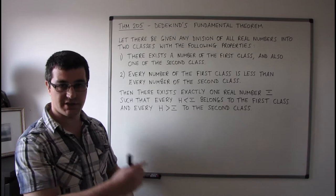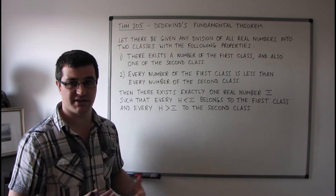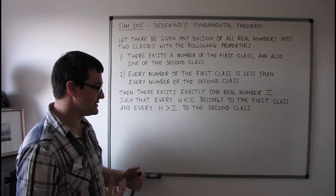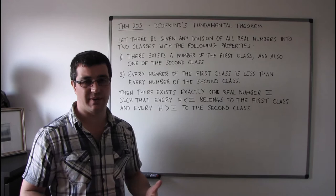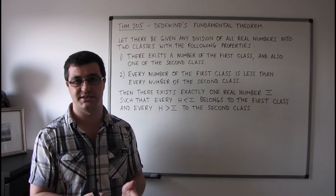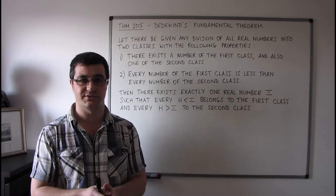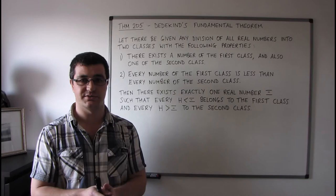In any existence and uniqueness theorem, the uniqueness part tends to be considerably easier to do than the existence. This follows the format of just about any uniqueness theorem, which is to assume that you've got two objects satisfying your criteria and either show that you get a contradiction or that the two objects must actually be one and the same.